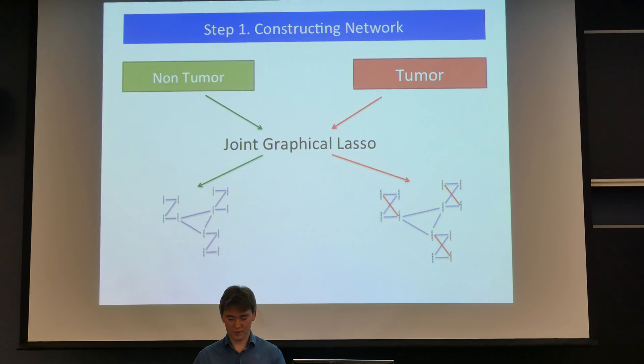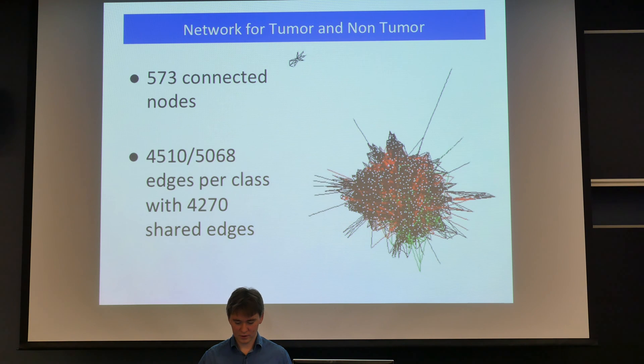So we run this algorithm for non-tumor and tumor and got these two networks. And there you can see the network - black edges are similar for both tumor and non-tumor, green edges are edges for non-tumor data, and red ones are for tumor data.